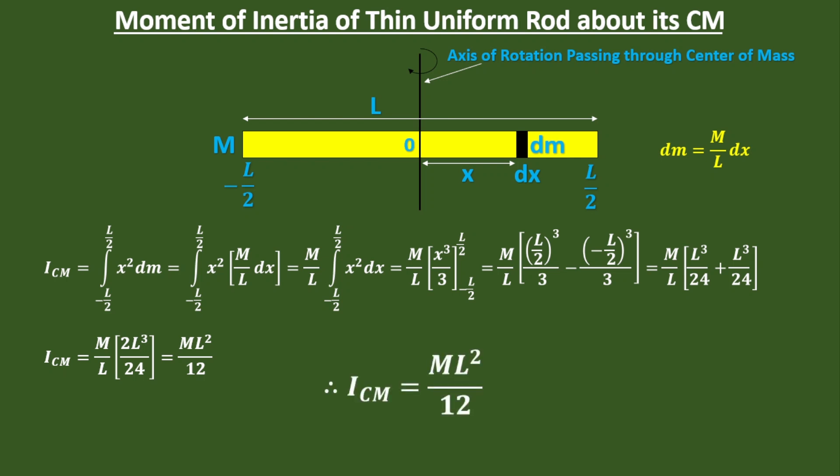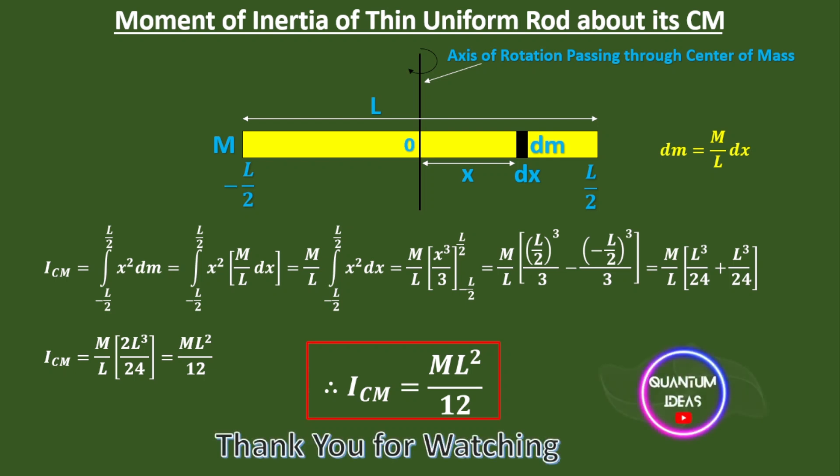And this is the final formula of moment of inertia of a thin uniform rod about its center of mass, that is ML squared over 12. This is very easy to derive. Thank you for watching. Please subscribe to our channel Quantum Ideas. See you in the next video. Bye bye.